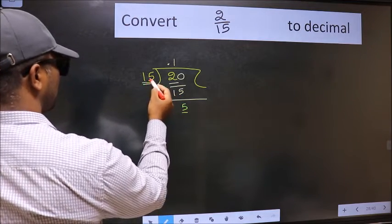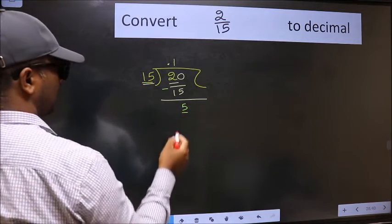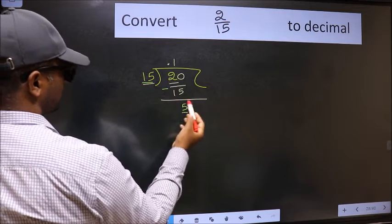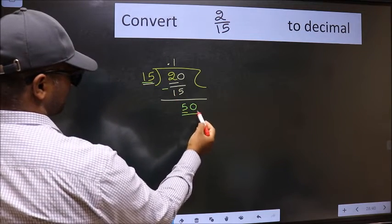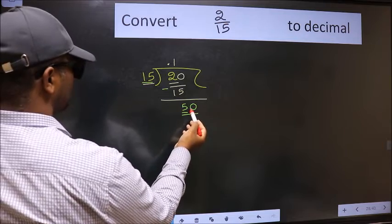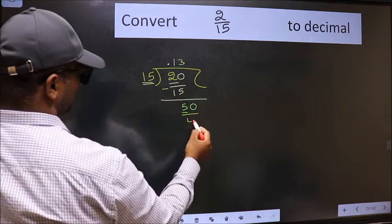Here we have 5 and here 15. 5 is smaller than 15. And we already have the decimal, so this time we can directly take 0. So, 50. A number close to 50 in 15 table is 15 threes, 45.